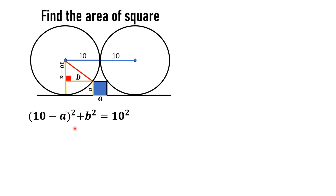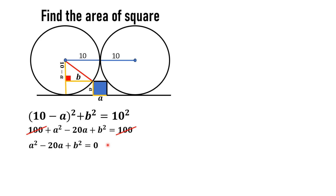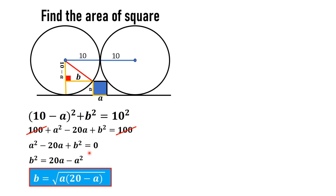By the Pythagorean theorem: (10 minus a) squared plus b squared equals 10 squared. Expanding: 100 plus a squared minus 20a plus b squared equals 100. The 100 cancels out, so the equation becomes a squared minus 20a plus b squared equals 0. Separating b squared, we find b equals the square root of a times (20 minus a). Let's call this equation number one.